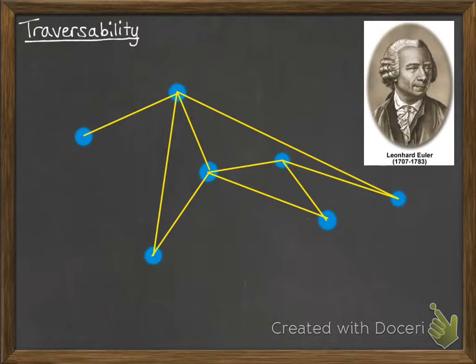If you take a look at this network that I've got drawn for you on the screen, you can quite easily see that you can create a path on this network where you can draw this without lifting your pencil off the paper and without going over the same line twice.